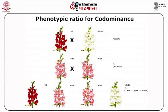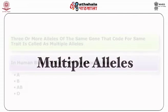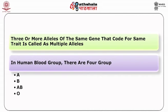Note that classical terminology for dominance is considered inappropriate in such cases. In reality, such cases should not be said to exhibit dominance at all. Last is multiple alleles. When there are three or more alleles of the same gene that code for the same trait, this is called multiple alleles. For example, in human blood there are four groups — A, B, AB, and O.